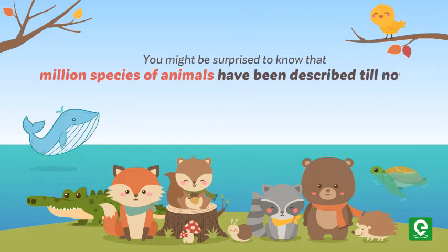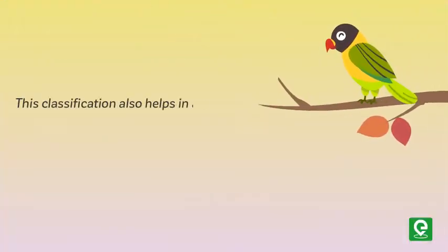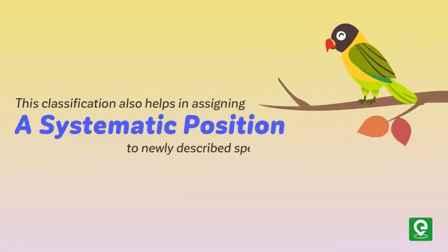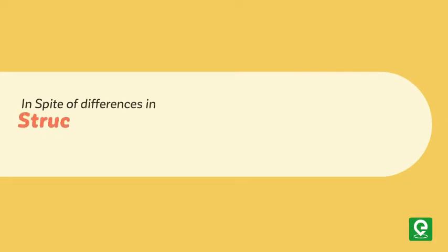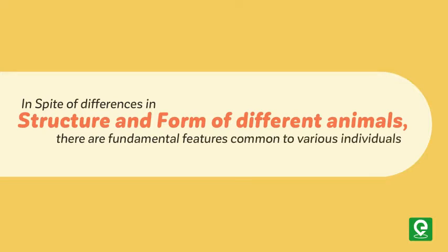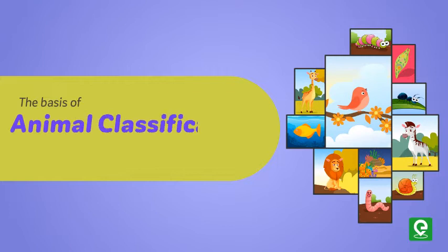Therefore, the need for classification becomes all the more important. This classification also helps in assigning a systematic position to newly described species. In spite of differences in structure and form of different animals, there are fundamental features common to various individuals which form the basis of animal classification.